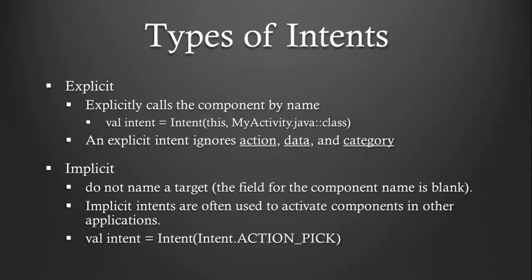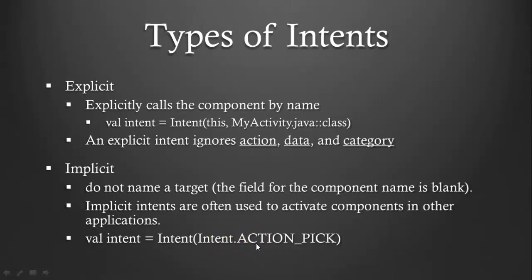Explicit versus implicit intents — a quick summary. Explicit: we're calling the activity by name, it ignores action, data, and category, and is typically used within one single application. Implicit: we don't name a specific class, we're activating something outside of our application, and typically we'll pass a string representing what we want to do. A little tricky syntax here is that while we're passing a string data type, usually we're passing it as a constant — so you see intent dot action pick, which is just a variable called action pick on the intent class, but under the covers it's actually just a string. Action pick is very general — it says I want to pick something. It's like saying I want a baseball player without saying I want a center fielder, a pitcher, or a catcher. We need to get from the very general to specify exactly what type we want.